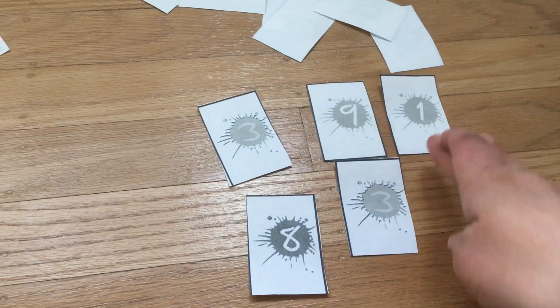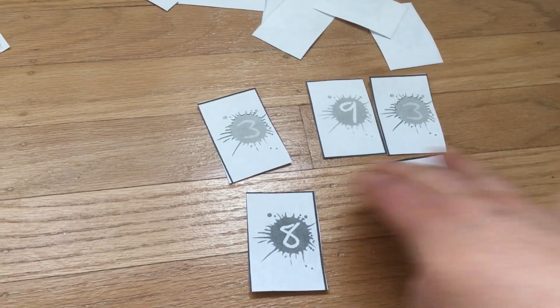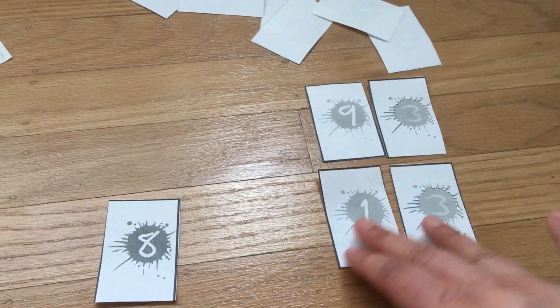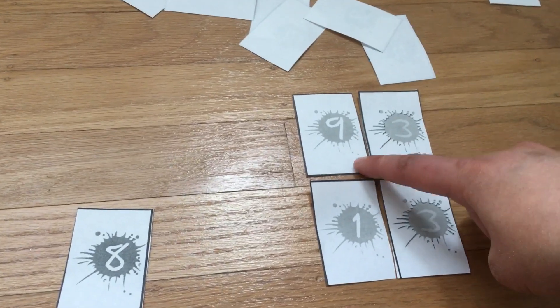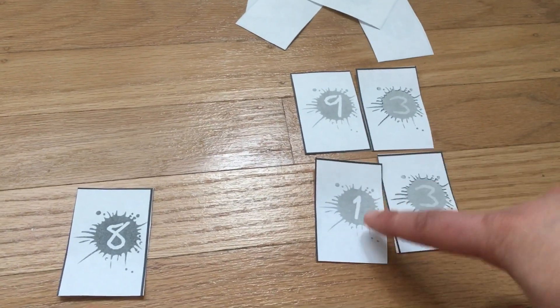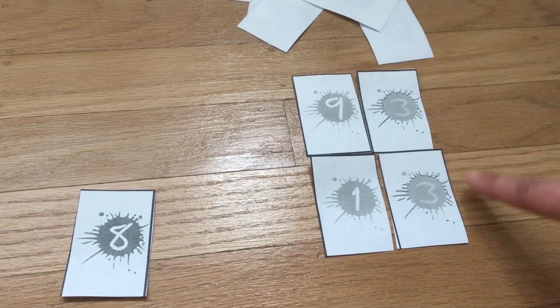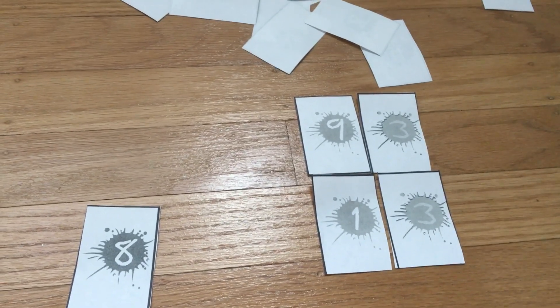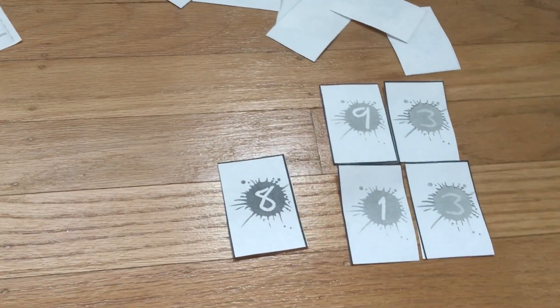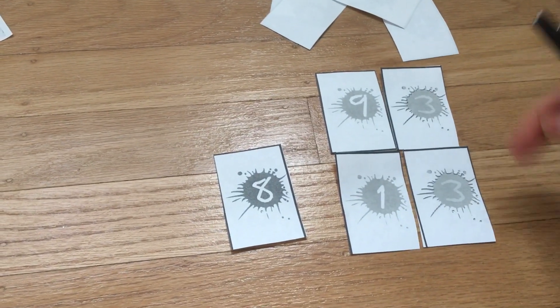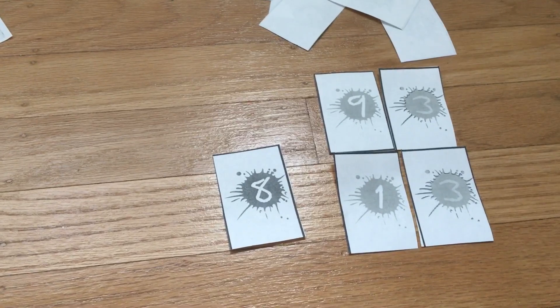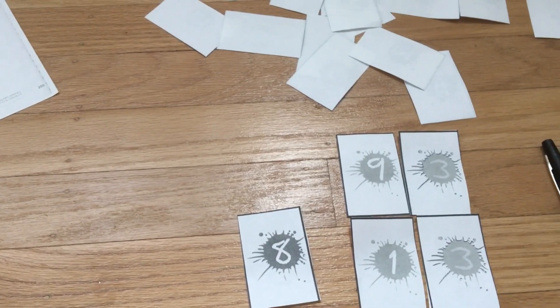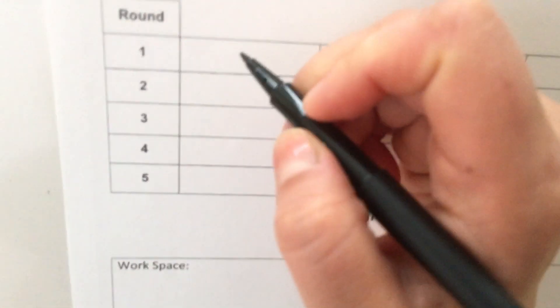I think I'm gonna stick with 93 and 13. That would make it... So nine tens and one ten is a hundred. Three ones and three ones is six. So 106. So I would write for round one, after fiddling around with my cards and adding up my tens place and trying to figure out my ones, I think this is the best arrangement for me to get as close to 100 as possible for this round.